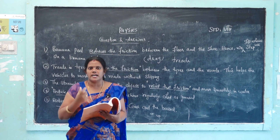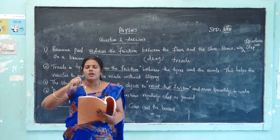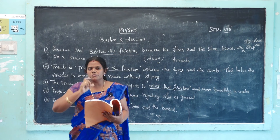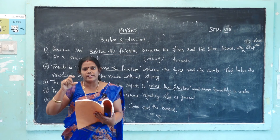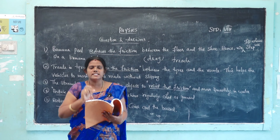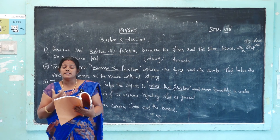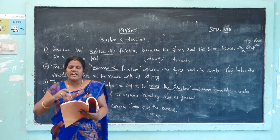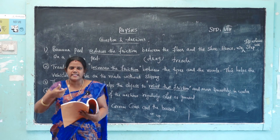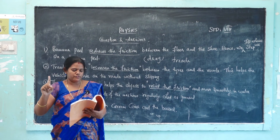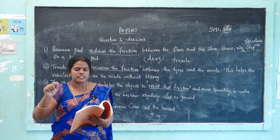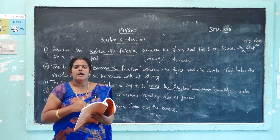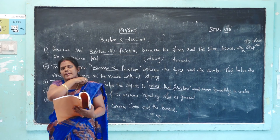Now for brief questions. First: why does friction occur? Friction occurs because of irregularities on the surface of substances. All surfaces have some irregularities, and these irregularities produce friction between the surfaces.